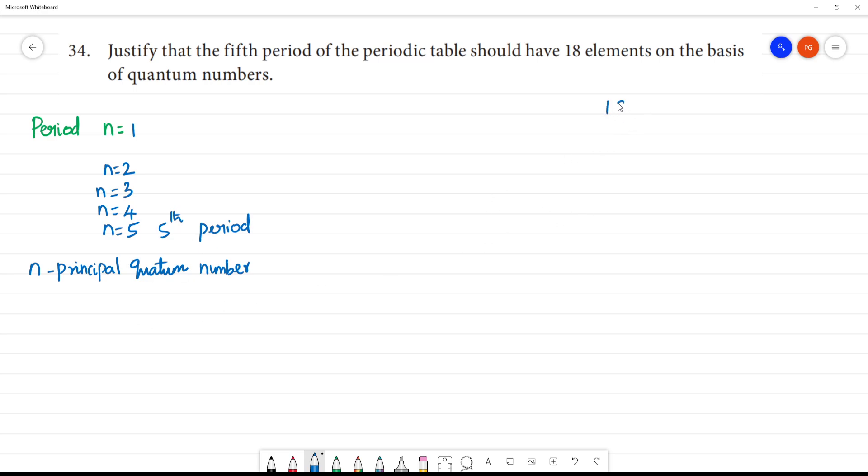Now we have aufbau principle. Energy level number is 1s, 2s, 3s, 4s, 5s, 6s, 7s. Okay, then we have 2p, 3p, 4p, 5p, 6p, and 7p. Next thing is 3d, 4d, 5d, 6d.